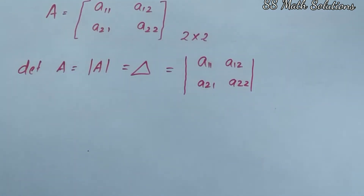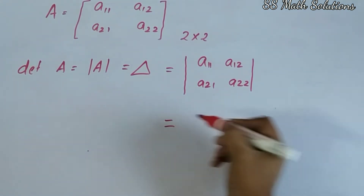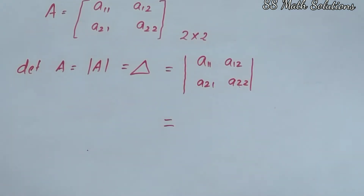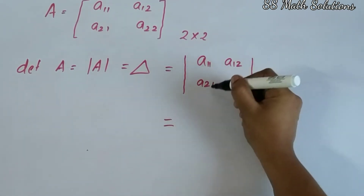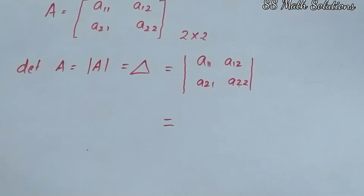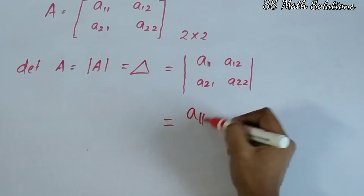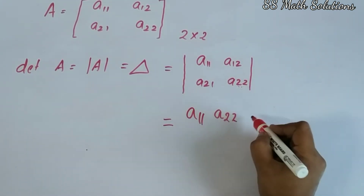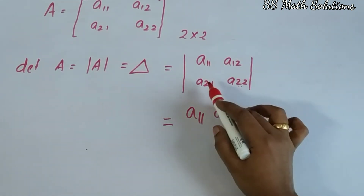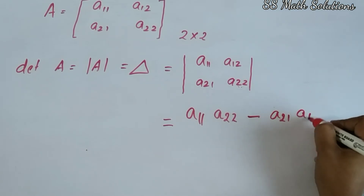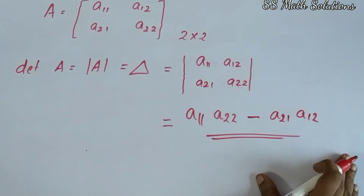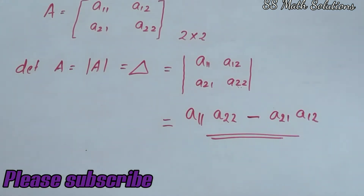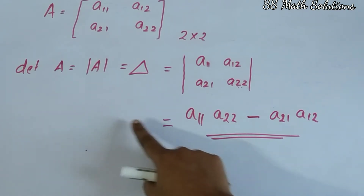We need to find the determinant — it is very easy. We have A11, A12, A21, A22. Just cross multiply: A11 with A22, and A21 with A12, then subtract. So the formula is: determinant of A = A11·A22 minus A21·A12. Just cross multiply and subtract, and you will get the answer. A11·A22 minus A21·A12 is the determinant of a 2×2 square matrix.